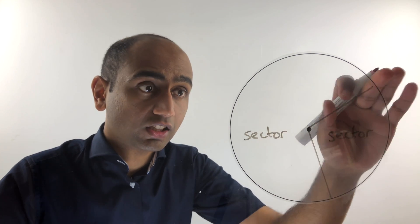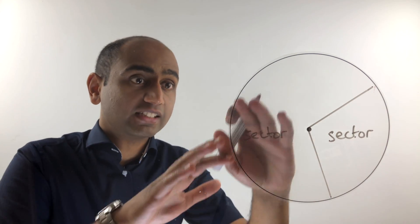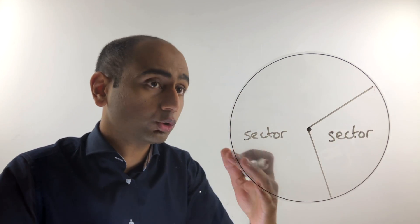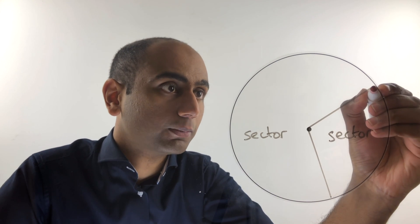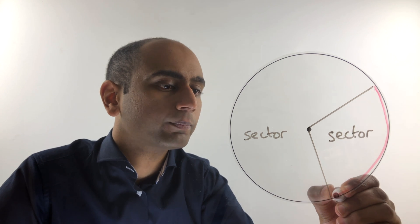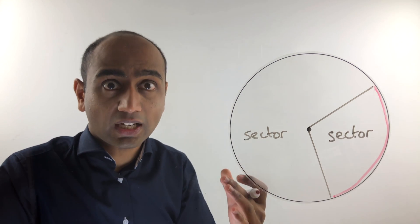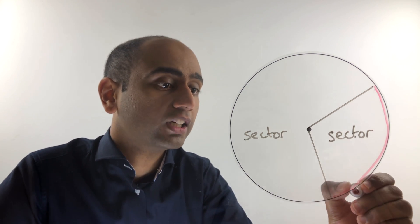Now by slicing the circle in this way, we haven't just split its area into two sectors—we've also split its circumference. We've got part of the circumference from here round to here, and that part has a name. It's called an arc.